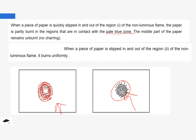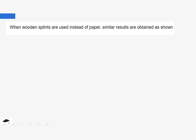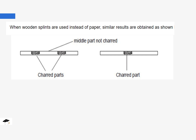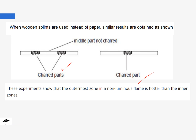The same experiment was repeated with wooden splints. They were placed once again with one touching the almost colorless inner region and the outer zone, and the other placed fully on the pale blue zone. The observations were: the splint placed on the inner part of the flame had some charred parts but the middle was not charred at all, while the one placed on the outer zone was charred uniformly.